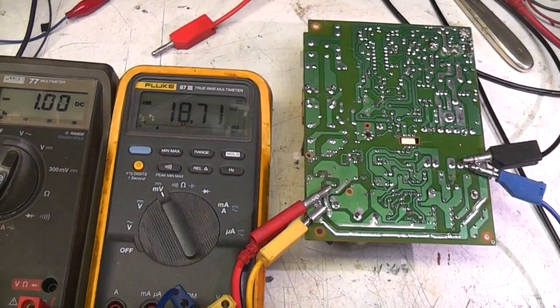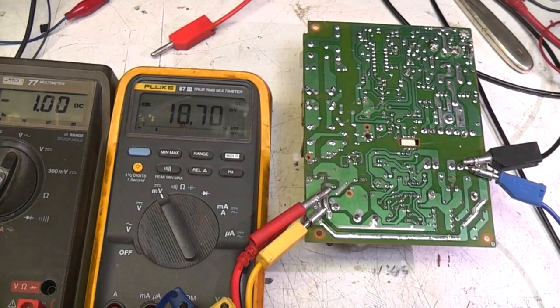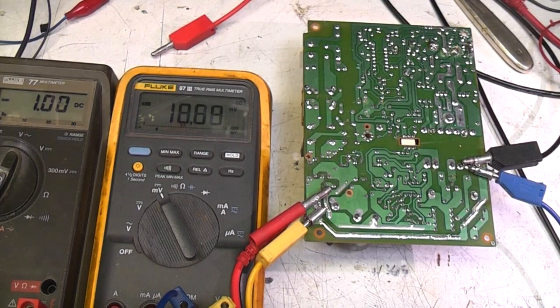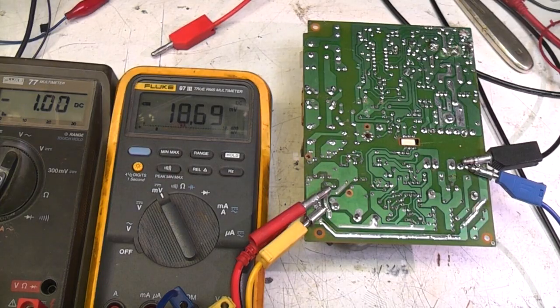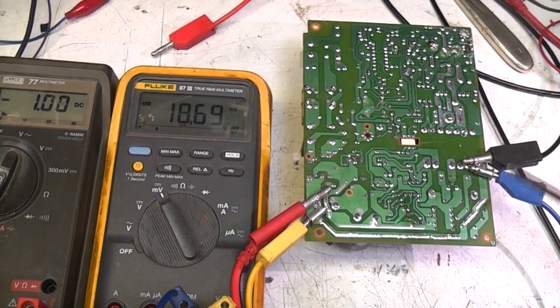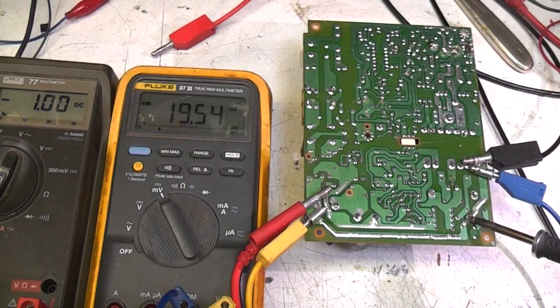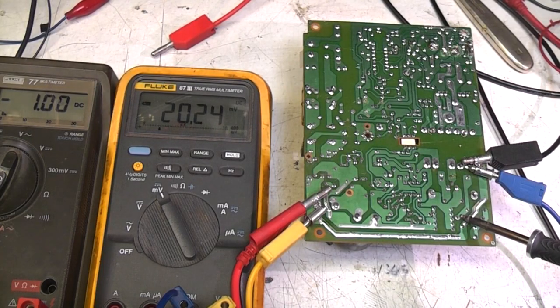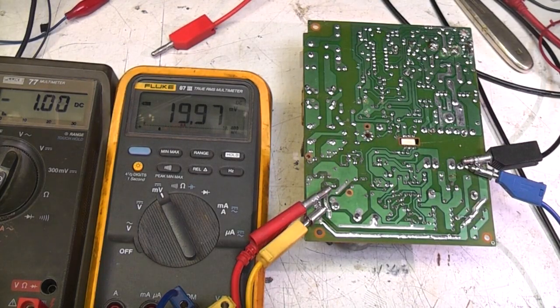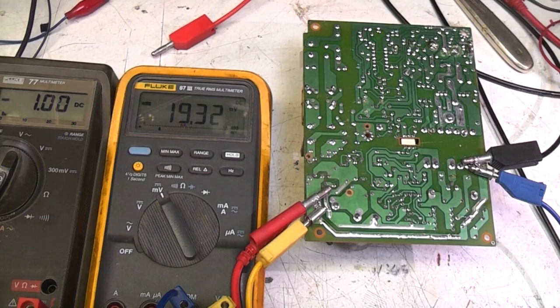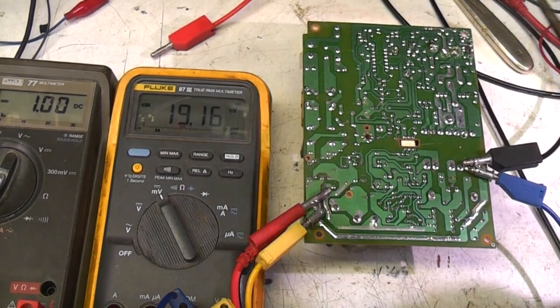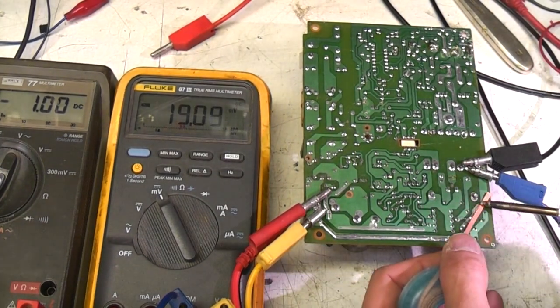I'm going to remove some of this solder with desoldering braid and see what difference it makes. I'd expect to see a slight difference due to temperature. Let's just evaluate that - let's heat the track up without taking any solder off. You can see the resistance is going up because the temperature is increasing, but that will go back to its original value once it cools down. Let's try this little section up here and take all the solder off.